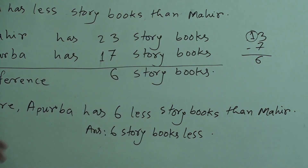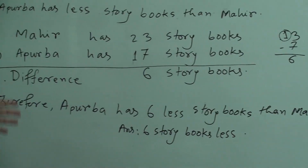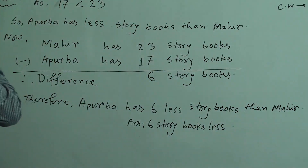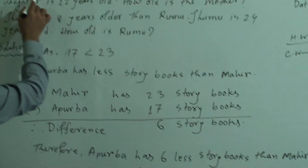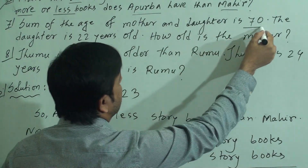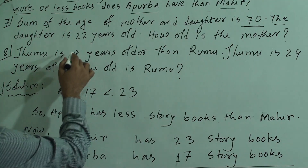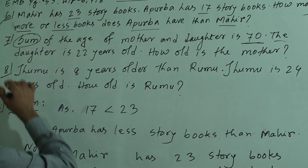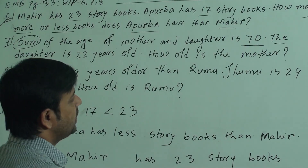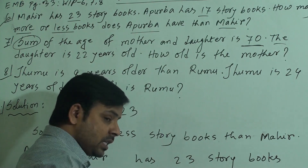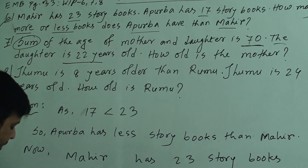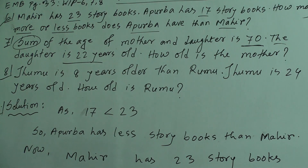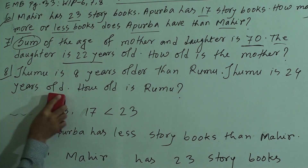I hope you have understood the solution of question 6. Now I will solve question 7. Question 7: The sum of the age of mother and daughter is 70. The daughter is 22 years old. How old is the mother? Sum means if we add the age of mother and daughter, that will be 70. So total age is 70 and the daughter's age is 22. If we subtract the age of daughter from the sum, we will get the age of mother.